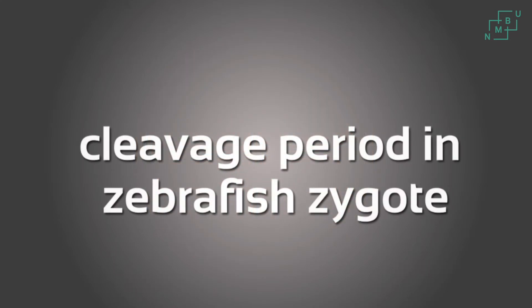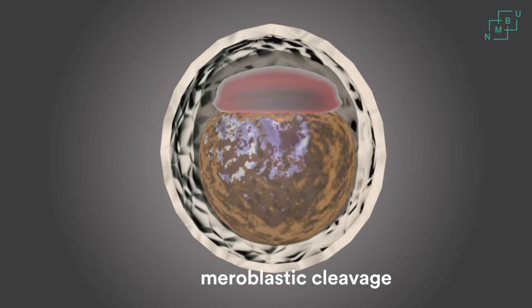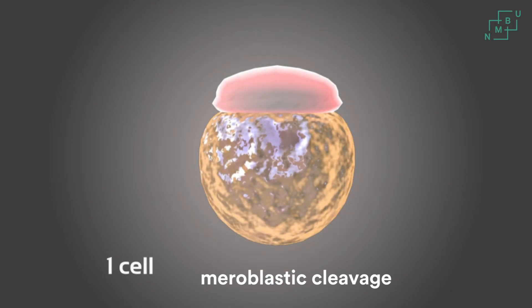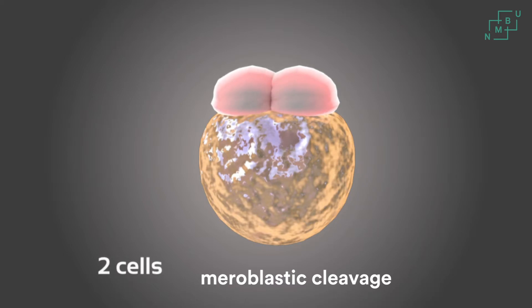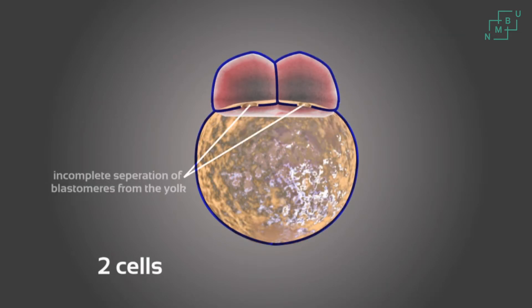Zebrafish eggs contain a large amount of yolk and so do not engage in holoblastic cleavage, but rather perform meroblastic cleavage. That is to say, cell division is confined to the non-yolk cytoplasm of the blastodisc. The first cell division occurs in the vertical plane of the blastodisc to produce two blastomeres at the animal pole that are incompletely separated from the yolk.